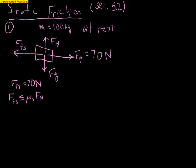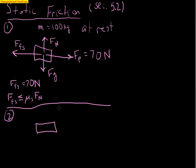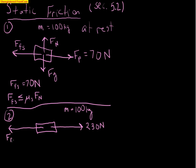Let's look at an example where we do know that. This time the same couch still has a mass of 100 kilograms, but we push on it with a force of 230 newtons and it just budges. The force it takes to just barely move it — to get it from rest to set in motion — is equal to the maximum force of static friction. So we've been pushing harder and harder, and this is the force with which it just begins to budge.